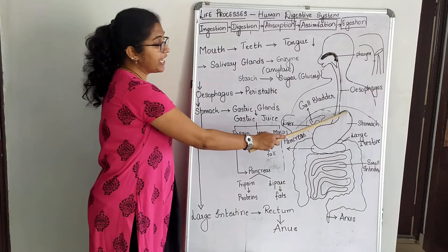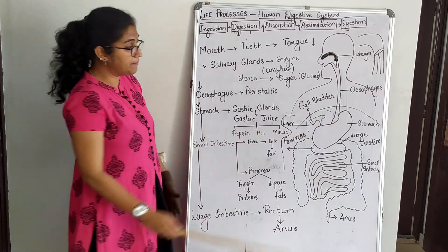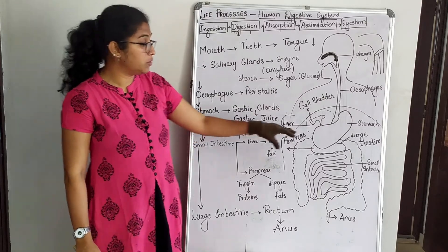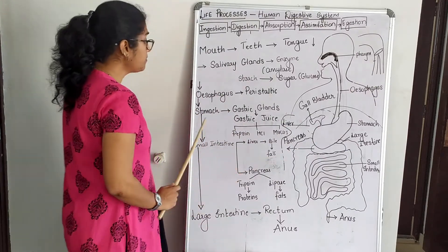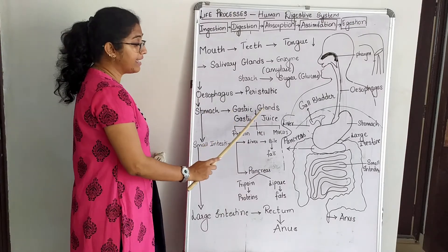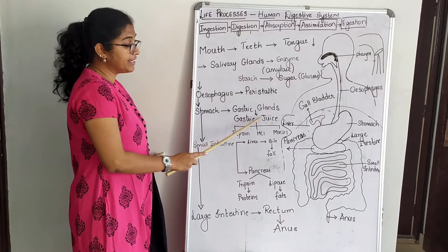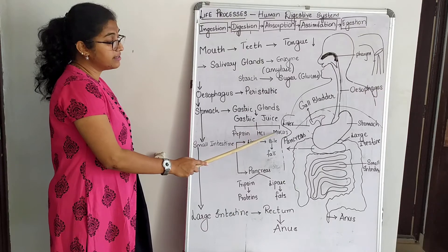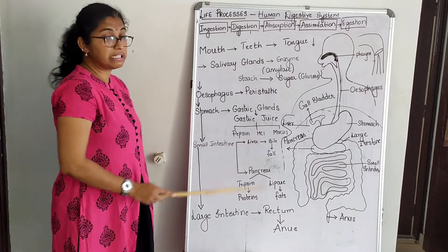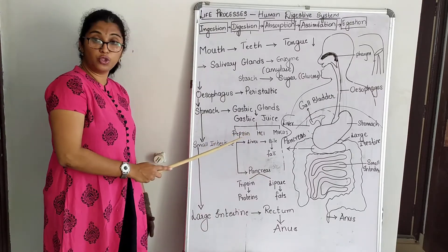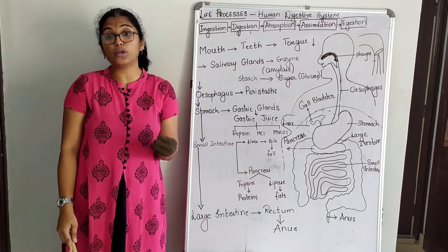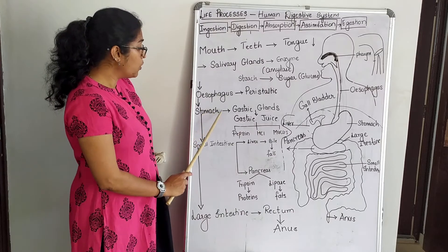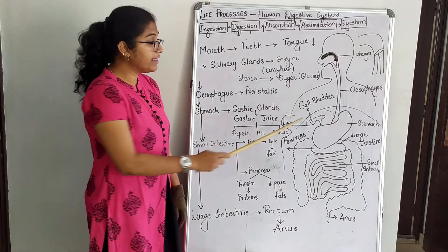This peristaltic movement helps the food move down the esophagus to the stomach. The stomach is a J-shaped organ located on the left side of the abdomen. The food which enters the stomach remains there for about 3 hours, where it is further broken down into simple food molecules and ground into a paste. The walls of the stomach have tubular glands called gastric glands, which secrete gastric juice. Gastric juice contains three important substances: pepsin, hydrochloric acid, and mucus. Hydrochloric acid creates an acidic medium for the pepsin enzyme to work. Pepsin helps in breaking down the proteins present in the food. Mucus protects the lining of the stomach from the acid.